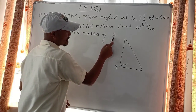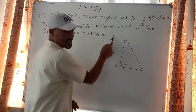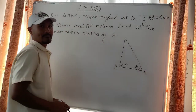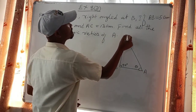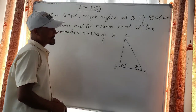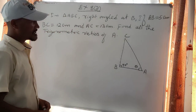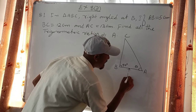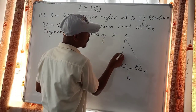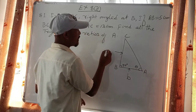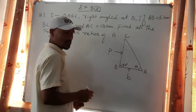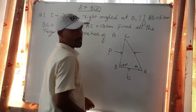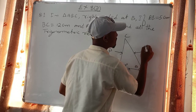The trigonometric ratios of A — A is the inclination angle and the value of theta. In the right angle triangle ABC, AB is one side, and we label the hypotenuse as H.